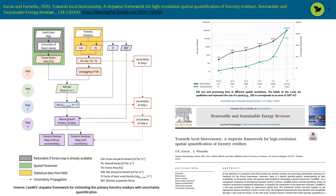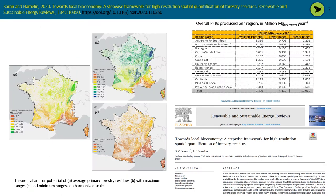While developing the CAM-B framework, we also developed a metric for deciding the spatial resolution for such assessments based on file size and processing time. The figure on the left shows the generic structure of the framework, combining inputs from satellite observations and forestry statistics to get results with uncertainties. The figure on the right shows a sharp increase in both file size and processing time after a 10-meter resolution, which helped us choose the mapping resolution. This gave us the first ever high-resolution country-scale map for forestry residues with uncertainty quantified as maps as well.